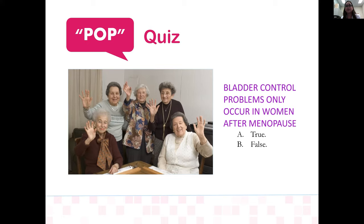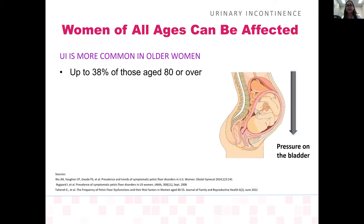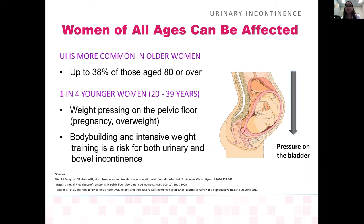Another pop quiz: bladder control problems only occur in women after menopause. This is false. Anyone can have this problem — even men can have bladder control problems. Urinary incontinence is more common in older women, with up to 38% of those aged 80 and over affected, but one in four younger women aged 20 to 39 can also have urinary incontinence, sometimes due to pregnancy or weight gain pressing on the pelvic floor.